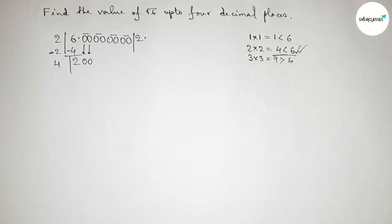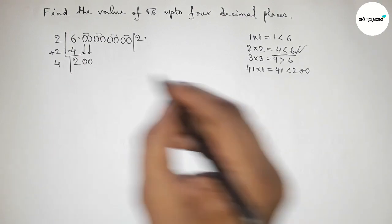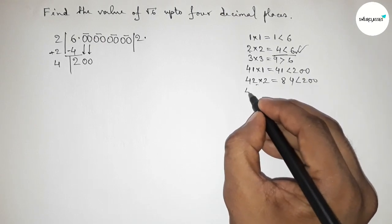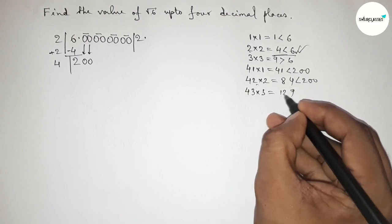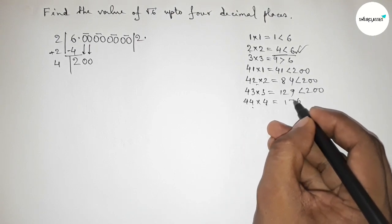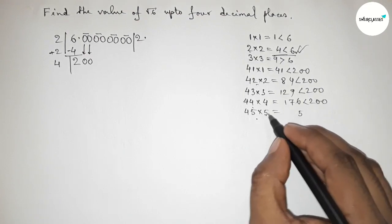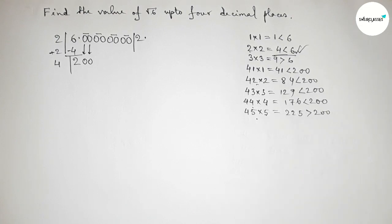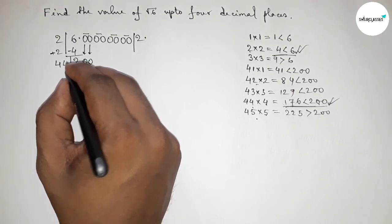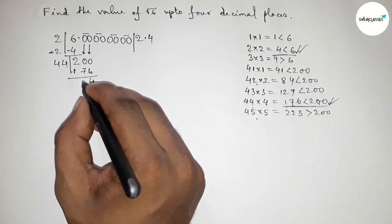Taking a number and multiplying: 41 × 1 = 41 (less than 200), 42 × 2 = 84 (less than 200), 43 × 3 = 129 (less than but not near 200), 44 × 4 = 176 (less than and almost near 200), 45 × 5 = 225 (greater than 200). So we take 4, putting 4 here and writing 176. Subtracting: 200 − 176 = 24.